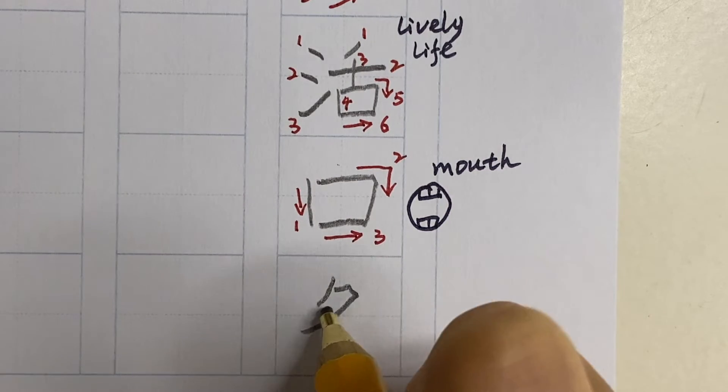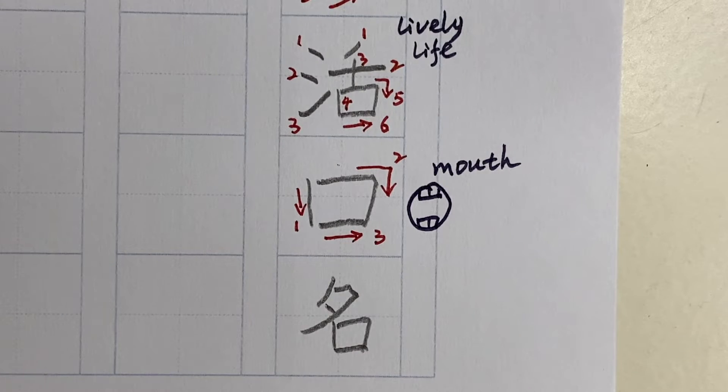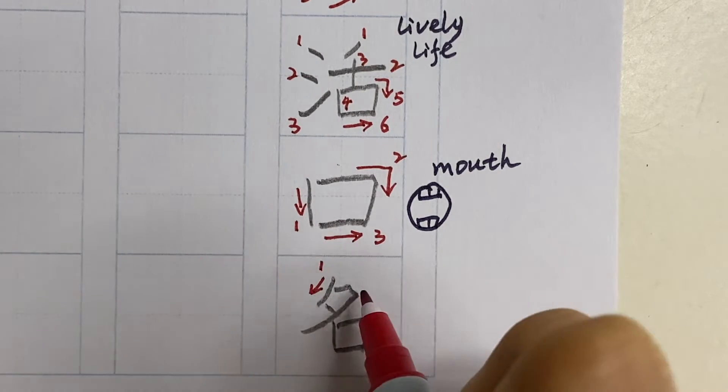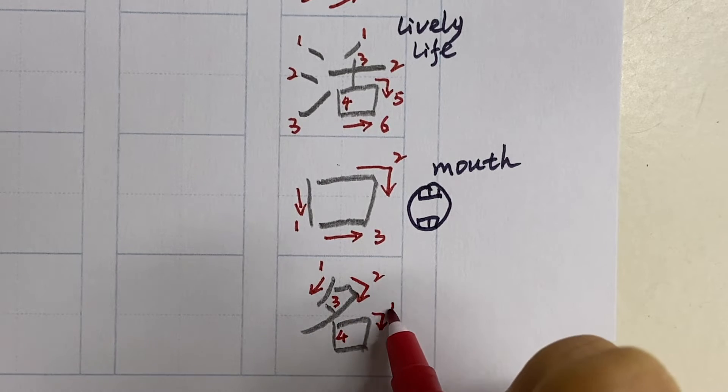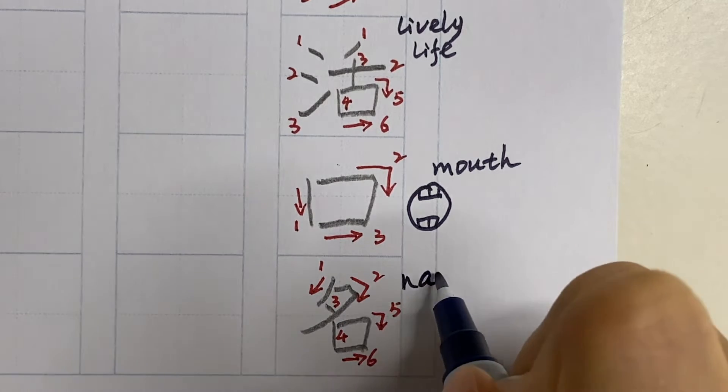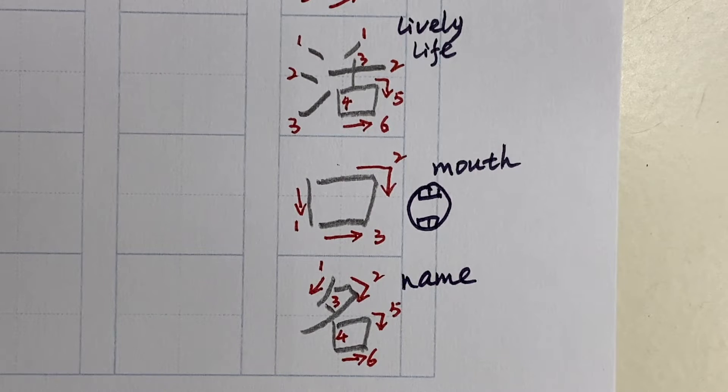An example kanji is namae na. It's our name. So left to right, and the box. It means name, na.